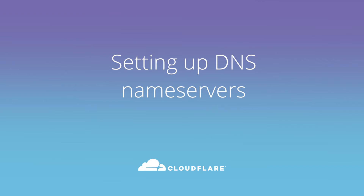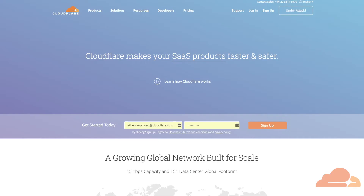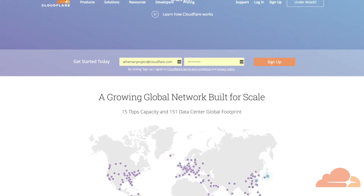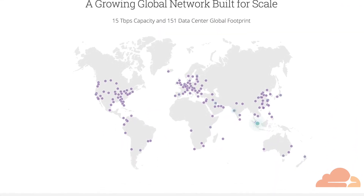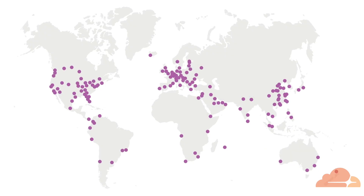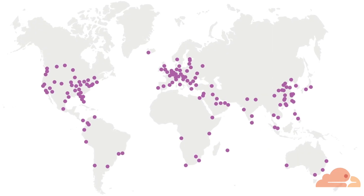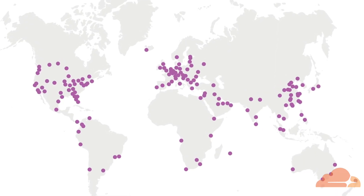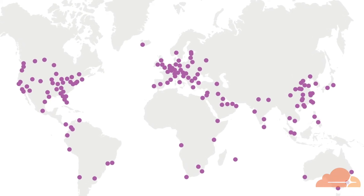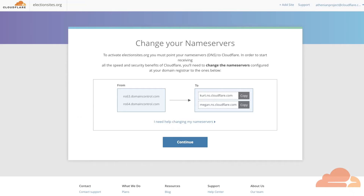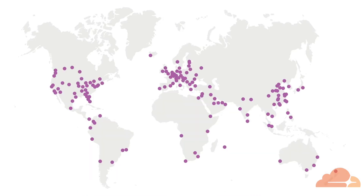Next, let's set up your DNS nameservers. What exactly does that mean? Well, when you activate Cloudflare, all traffic destined for your site passes through our network. Cloudflare is like a frontline shield standing between the clients visiting your site and your web server. This is how we are able to speed up and secure your website. For Cloudflare to achieve this, your domain registrar needs to associate your domain name with two Cloudflare nameservers. That way, all web requests hit the Cloudflare network first.